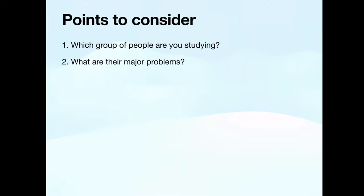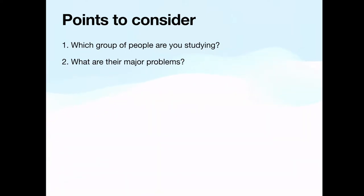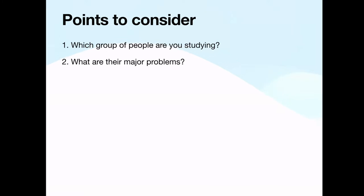Once you finalize that, we move on to the next point: what are the major problems that they are facing? Each group may have its own unique problems. For example, those who have recently migrated to another country, or migrant labourers, may face the issue of racism. You need to list all the major problems that this particular population could be facing.